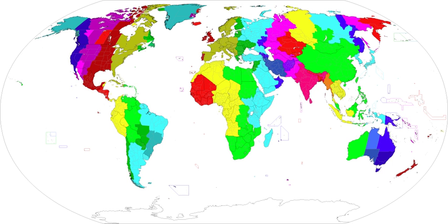UTC+5:40 is an identifier for a time offset from UTC of plus 5 hours 40 minutes. It was sometimes used as an approximation for Nepal time, which until 1986 was based on Kathmandu mean time at 85 degrees 19 minutes East, or 5 hours 41 minutes and 16 seconds. Since 1986, Nepal time is UTC+5:45.